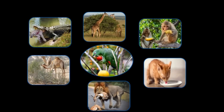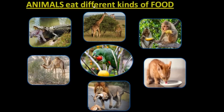Some are eating leaves of plants, like camel and giraffe. Some are eating fruits, like monkey and parrot. And cat is drinking milk. So children, from here, we notice that animals eat different kinds of food — that is, different animals eat different kinds of food.